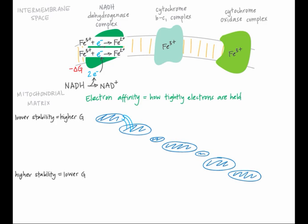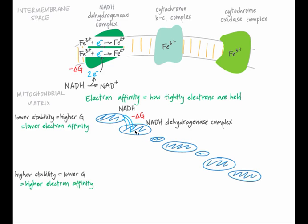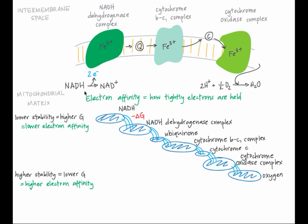So we can equate low stability with high free energy and low electron affinity. Higher stability is lower free energy and higher electron affinity. Just as water would not spontaneously move from the lower pool back to the top pool, electrons would not spontaneously move from NADH dehydrogenase complex back to NADH.